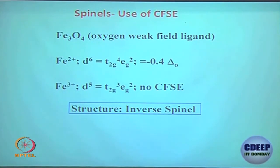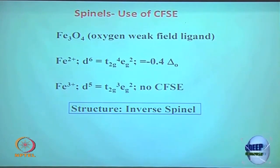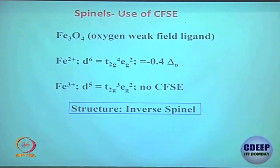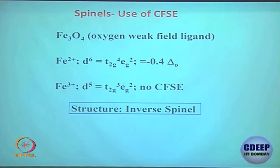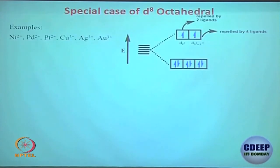The rule is simple: higher oxidation state should prefer octahedral. The moment higher oxidation state becomes less favorable compared to the lower oxidation state, a switch happens — that is when inverse Spinel forms.